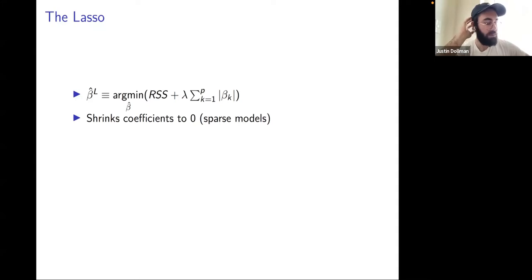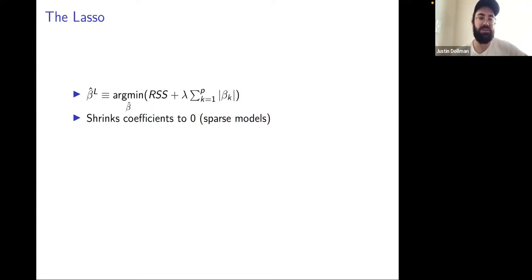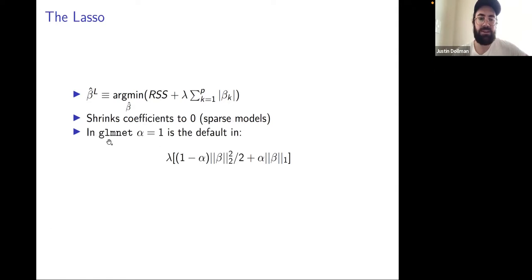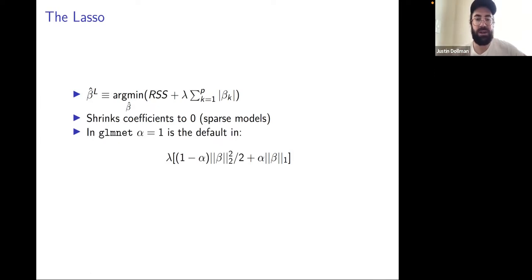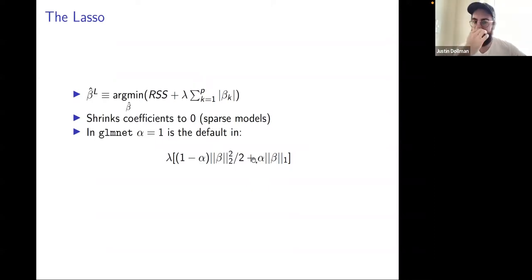The book makes a point about LASSO models being more interpretable, where interpretability just means fewer regressors. A practical note: GLMnet's default is actually to fit an elastic net — a mixture model where the penalty is (1-alpha) times the ridge part plus alpha times the LASSO part. So that's something you'll encounter if you actually fit these models.